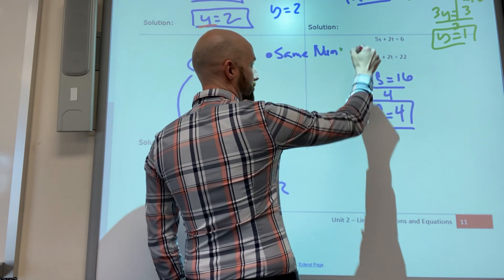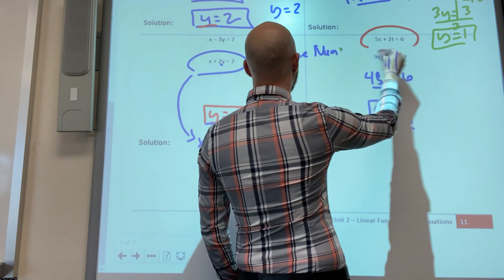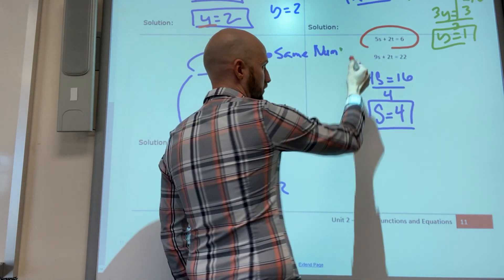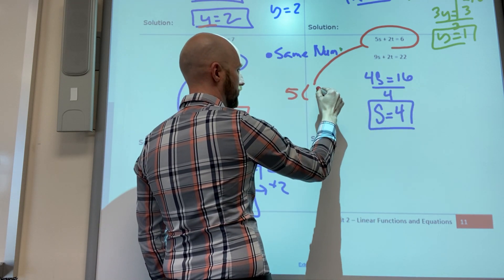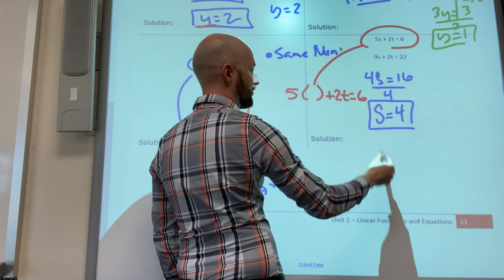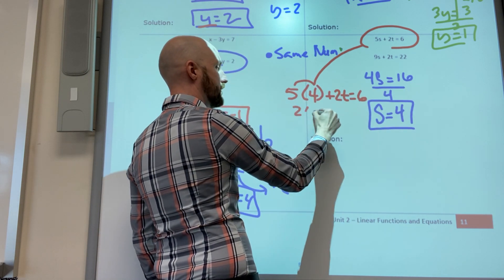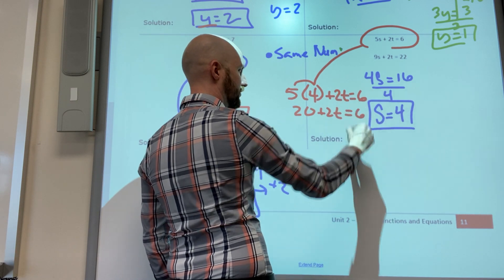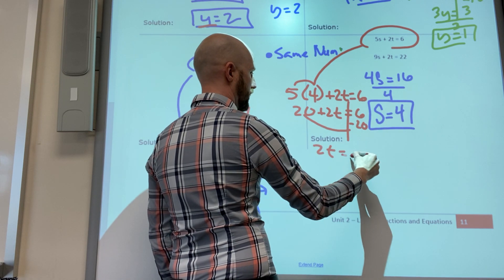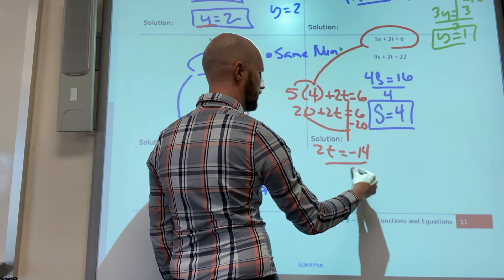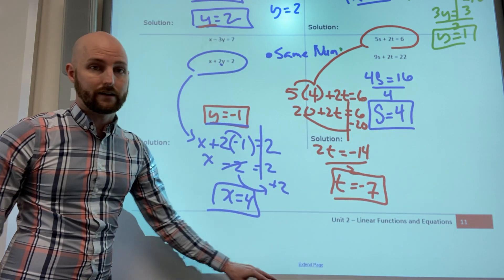Now which one do you think looks better to you? I like this one because the number is more small. So I have five s plus two t equals six, so I have twenty plus two t equals six, minus twenty, minus fourteen, divide by two is negative seven.